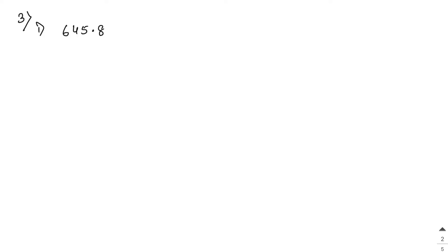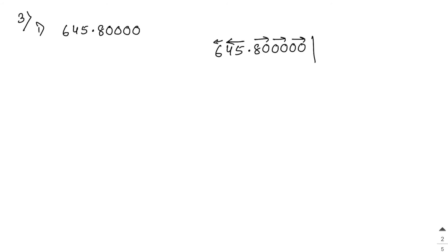Sum number 3: find the square root of 645.8 correct to 2 decimal places. Since we need 2 decimal places, add zeros after 8 to get 645.8000. Make pairs: 6, 45, then after decimal 80, 00.